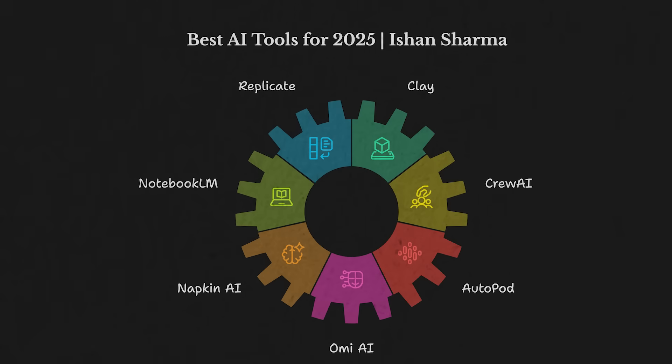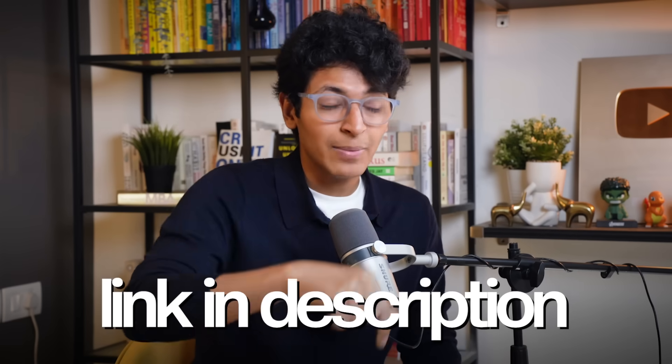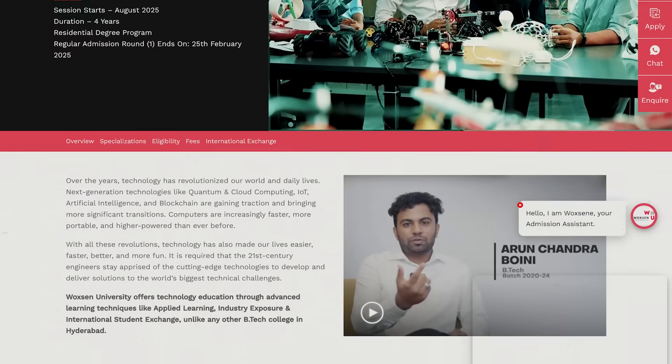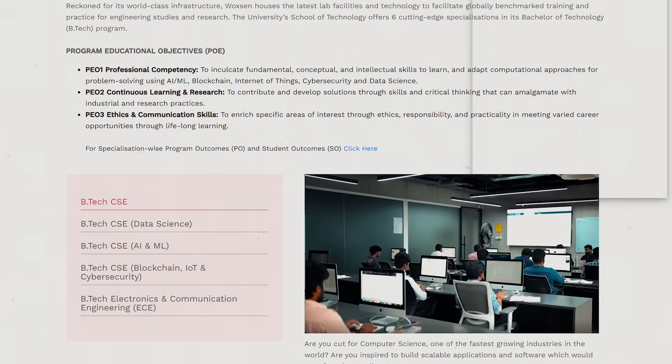Those were the 7 AI tools that you should check out in 2025. These tools can help you save time, make more money and in general have a better quality of life. Make sure you hit the like button. Try out all the tools with the links in the description. Also check out Voxone and their programs in artificial intelligence if you want to learn more and get involved in building tools of your own. Thank you so much for watching this video till the very end. Hit the like button, subscribe, share this video with a friend, and I will see you in the next video. Goodbye.